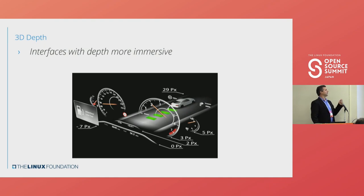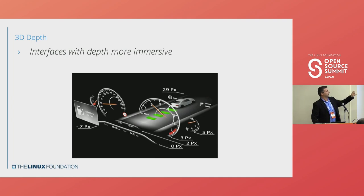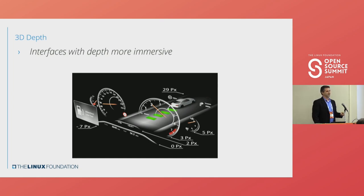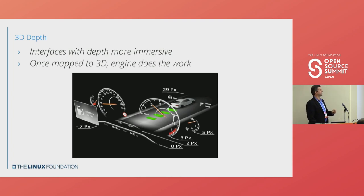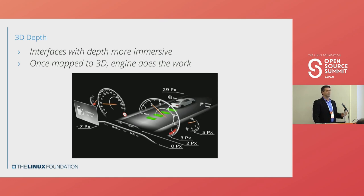Interfaces with depth are more immersive. In 2D you'd have to compile this, but in 3D you just place elements in Z-space — you have all your UI elements and you simply move them in that third dimension without doing the work of dealing with it dynamically. Once it's mapped to 3D space, the engine does everything else for you. The recurring theme: don't reinvent the wheel when you already have something to work with.